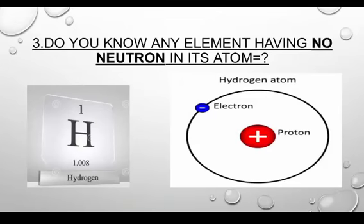Here is an interesting question: do you know any element that has no neutron in its atom? The hydrogen atom, shown on your screen, is an atom that has no neutron in its nucleus. It contains only one proton in its nucleus and one electron revolving around the nucleus in a shell — one electron, one proton, and no neutrons. Hydrogen is the simplest atom.